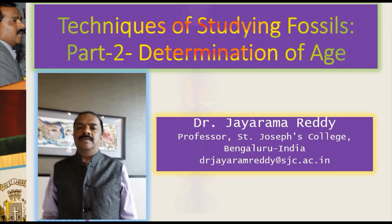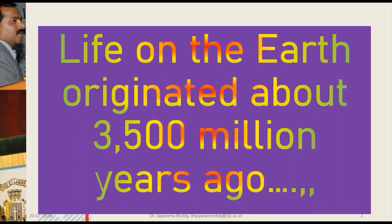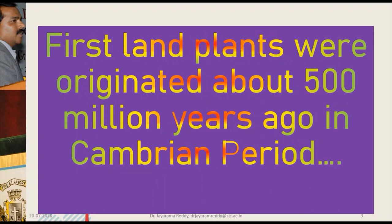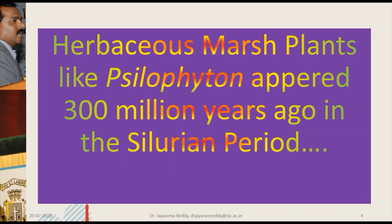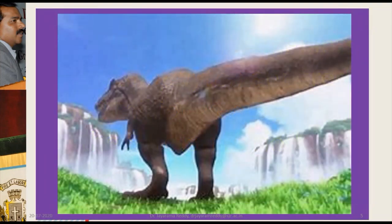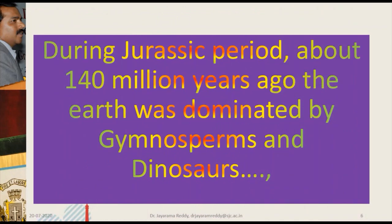Life on Earth originated about three and a half billion years back. The first lands originated about 500 million years ago in the Cambrian period. Herbaceous plants appeared about 300 million years ago in the Silurian period. Dinosaurs and gymnosperms dominated the Earth during the Jurassic period about 140 million years back.